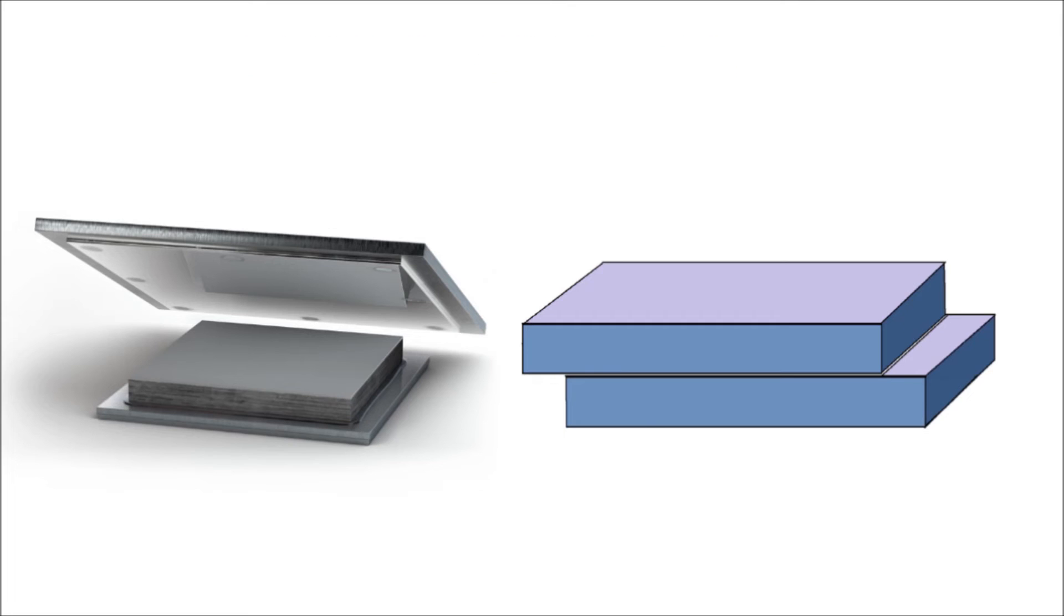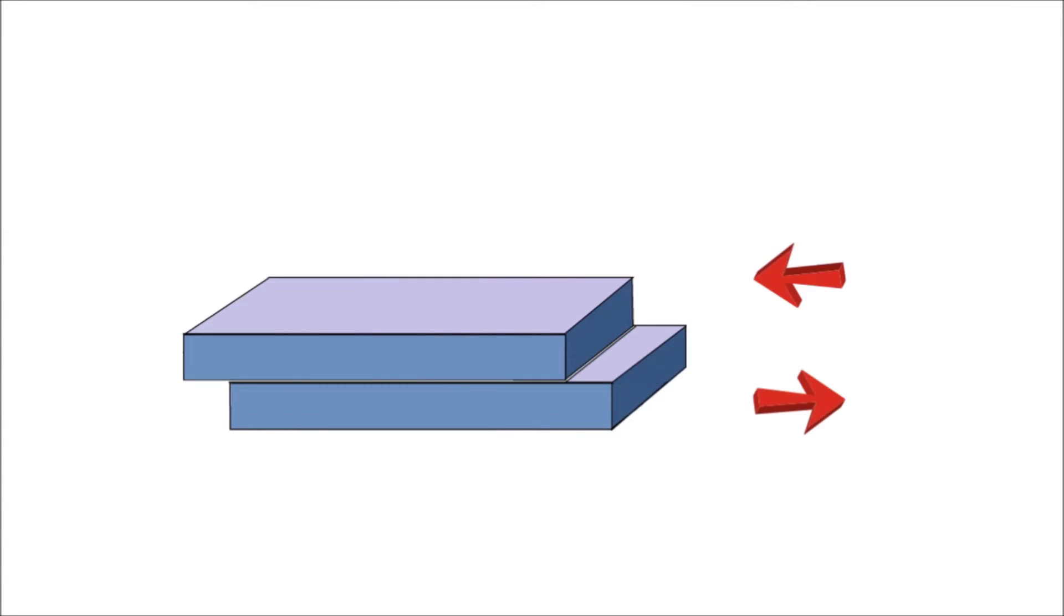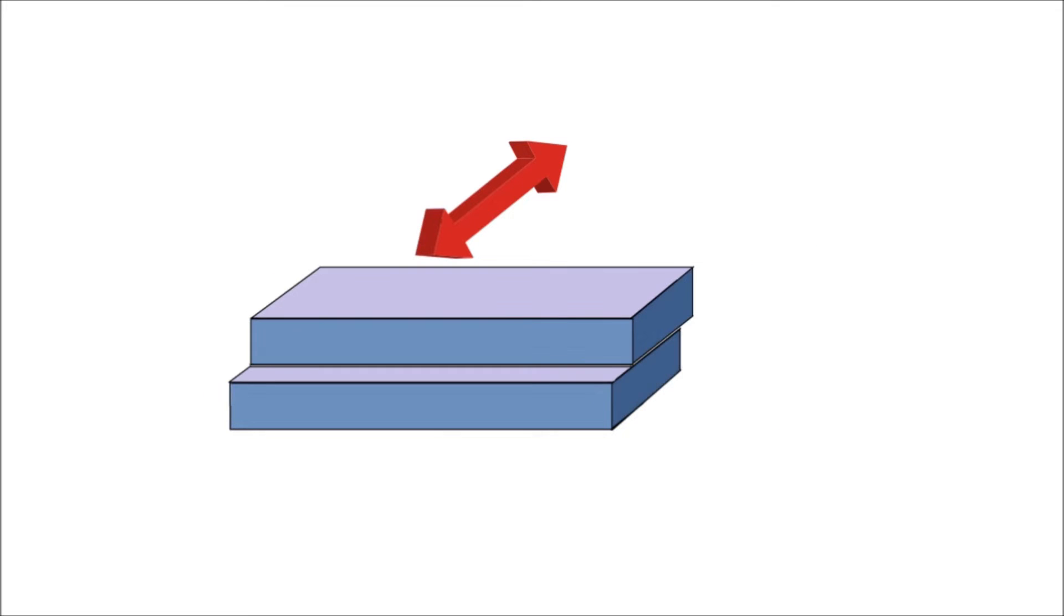Sliding bearings are a simple arrangement of two plates sliding over each other. These bearings permit translational movements in longitudinal direction as well as in the transverse direction, but no rotational movements are permitted.